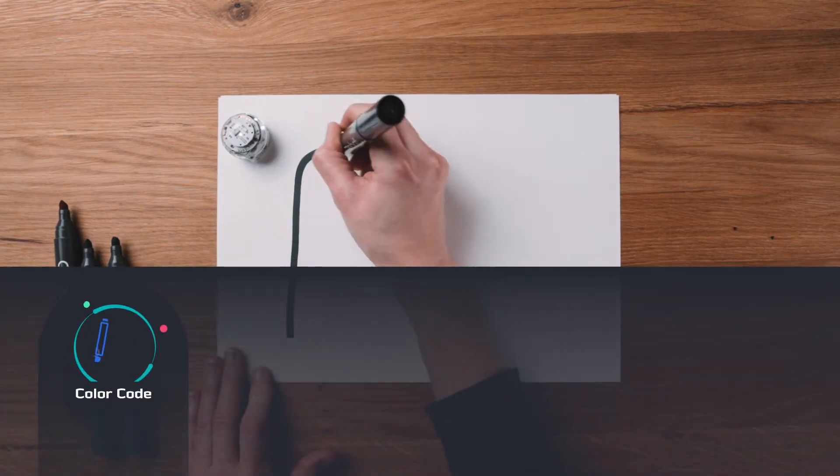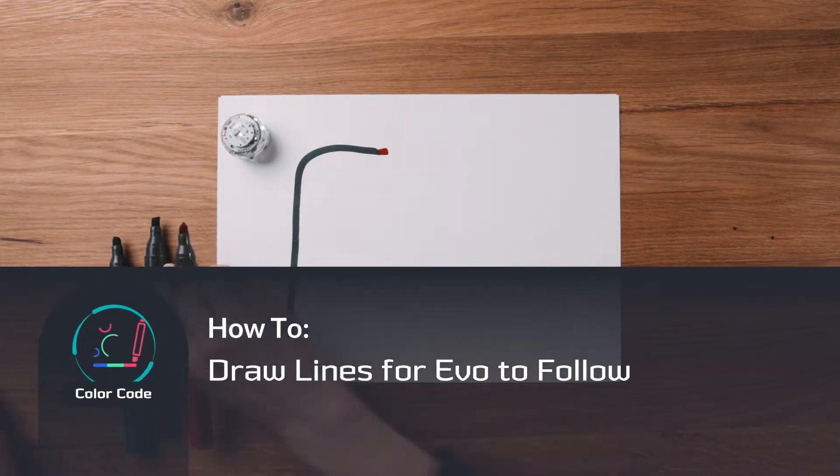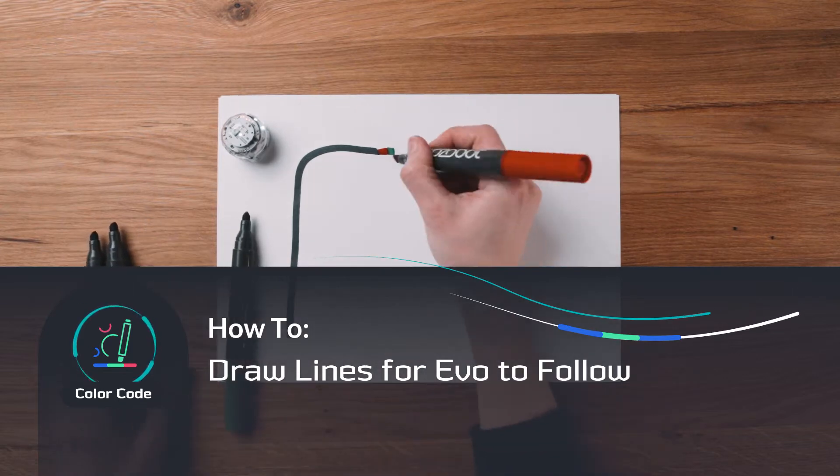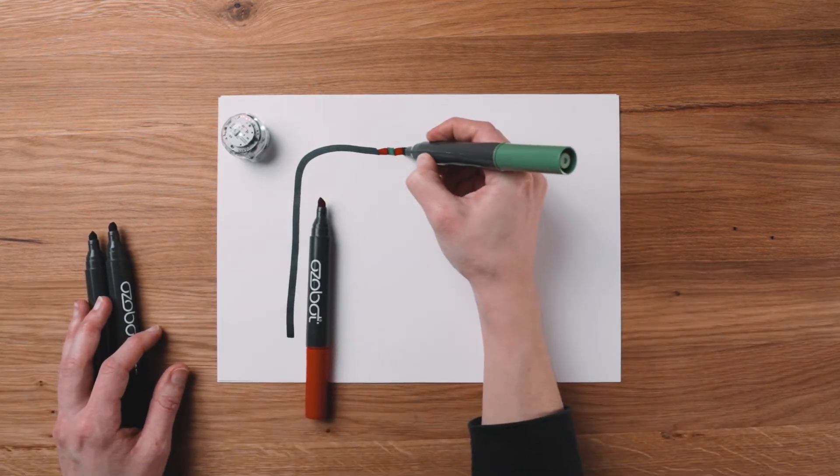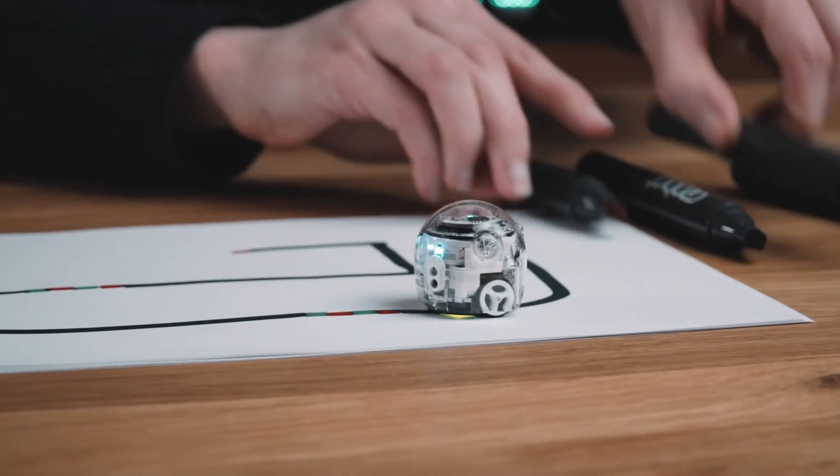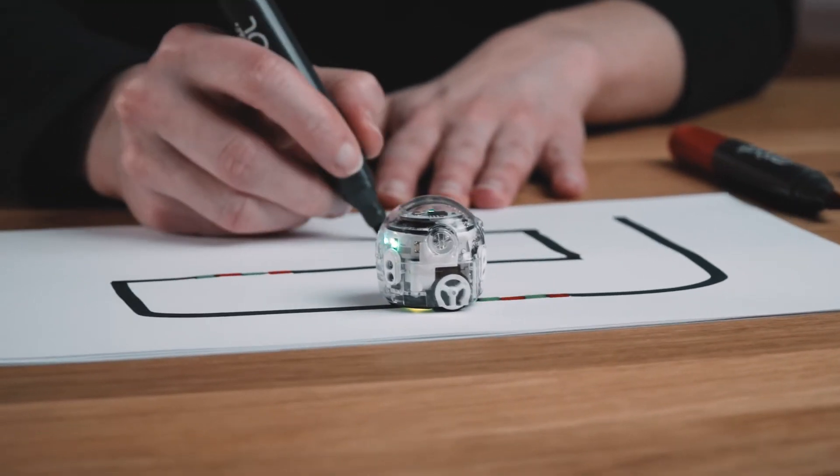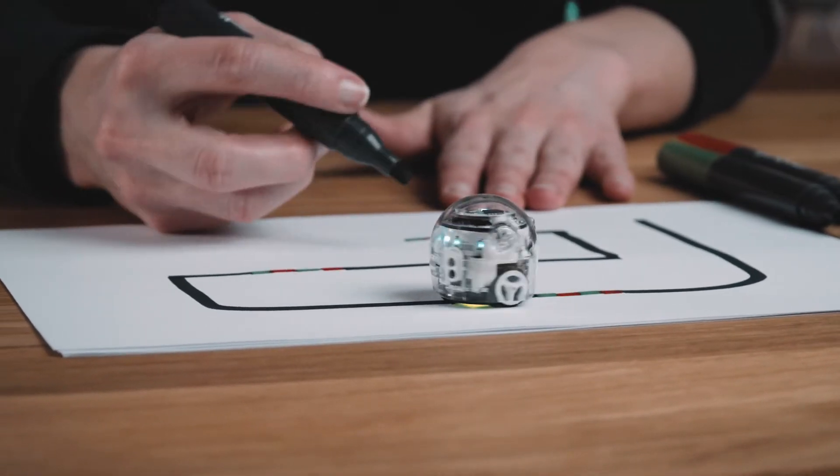There are two important components to practice to program Ozobot Evo with markers: lines and color codes. Evo automatically starts following lines you put it on. Let's go over how to draw them.